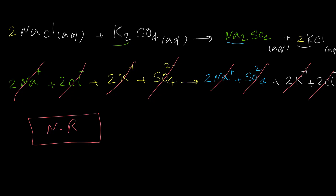The net ionic equation is: no reaction. By mixing sodium chloride and potassium sulfate solutions, nothing happens — it is just a physical mixing. When both the products and reactants are soluble compounds, there is just a mixture of ions in solution and nothing really happens between the cations and anions.